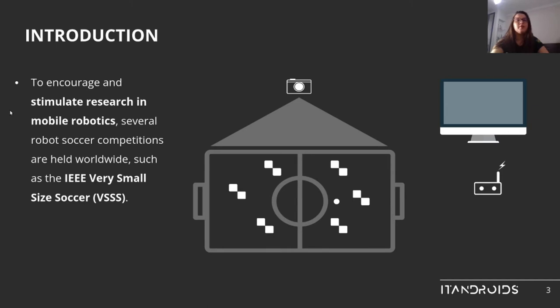The robots can only perform actions based on their communication with a computer. To do so, there is a camera over the field that captures the game images. We use computer vision algorithms to process these images and obtain the balls and robots' positions.